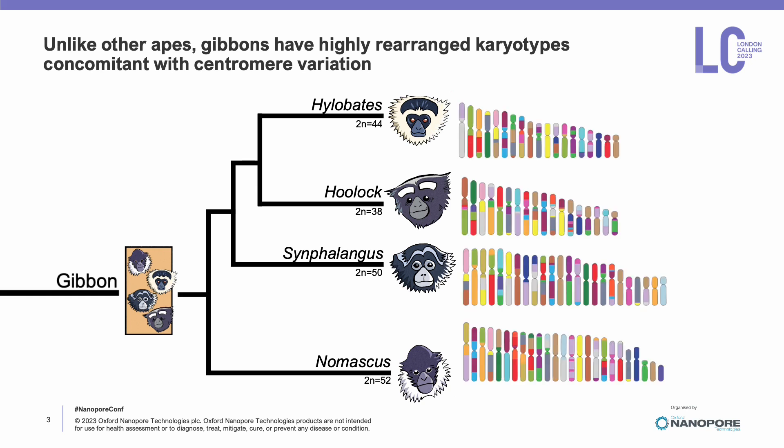Here, on this cartoon of the gibbon autosomes, regions that share homology with each of the 22 human autosomes are marked in a different color. Just by looking at these colors, you can get a sense for how rearranged these chromosomes are. My work focuses on investigating the features that underpin this rapid variation, starting with centromere variation.